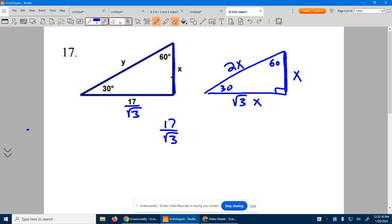But you can't have a radical in the denominator. So we rationalize it by multiplying by root 3 over root 3, which gives us 17 root 3 over 3. So X is equal to 17 root 3 over 3.